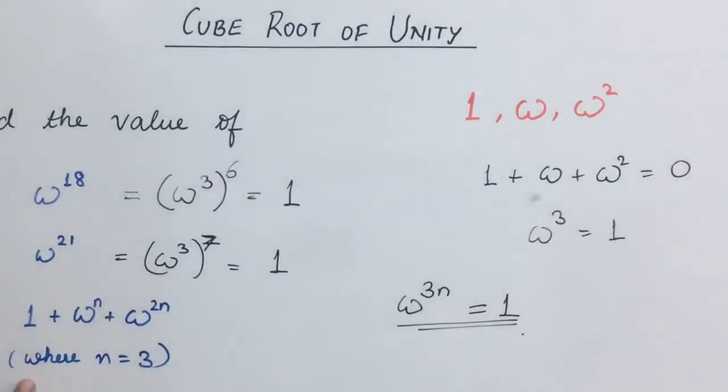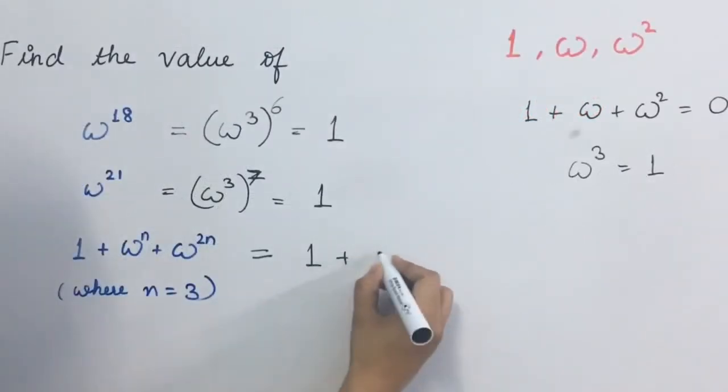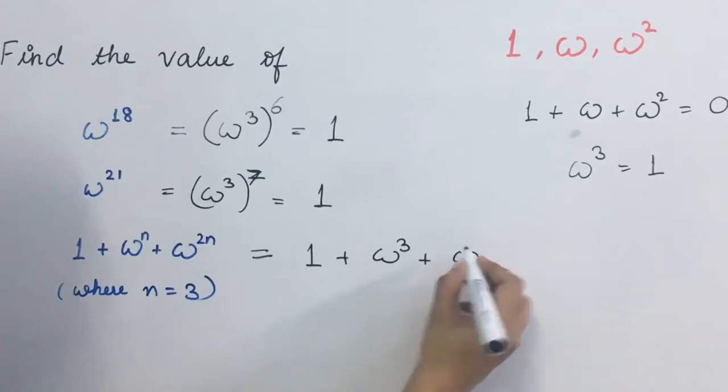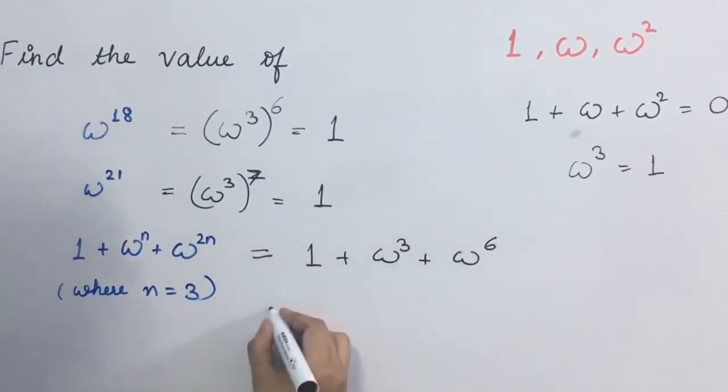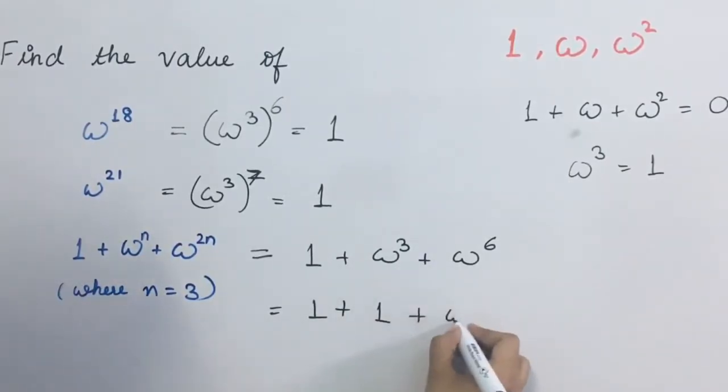Now, yaha par is question me hama dekhte hain 1 plus omega n plus omega 2n. Is generalization ko hama yeh here use kare. So this will be 1 plus omega 3 plus omega 3 into 2, that is 6. This is equal to 1 plus omega raised to power 3 is 1. Omega raised to power 6 is omega 3 into 2, that is again a multiple of 3. This will be equal to 1 plus 1 plus 1, that is equal to 3.